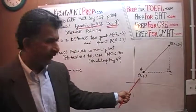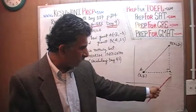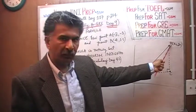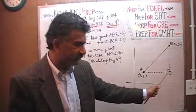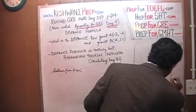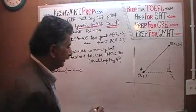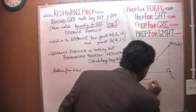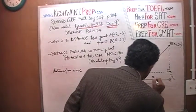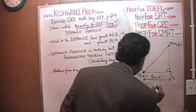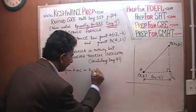A has an x-coordinate of x1. The x-coordinate of point C is the same as the x-coordinate of point B, because they are on a straight vertical line. So the x-coordinate of point C is x2. The distance from A to C is simply x2 minus x1.